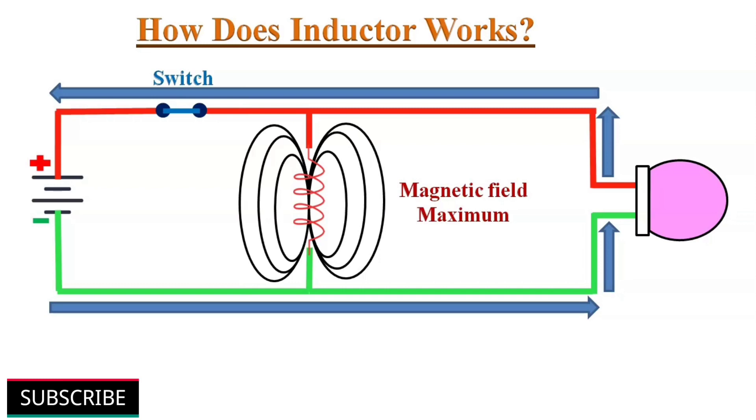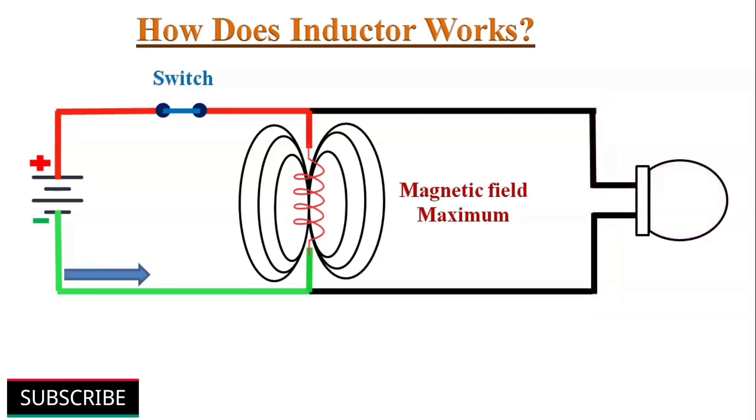This creates a very easy path for the flow of current, much easier than flowing through the lamp. So the entire current will flow through the inductor and the lamp will turn off.